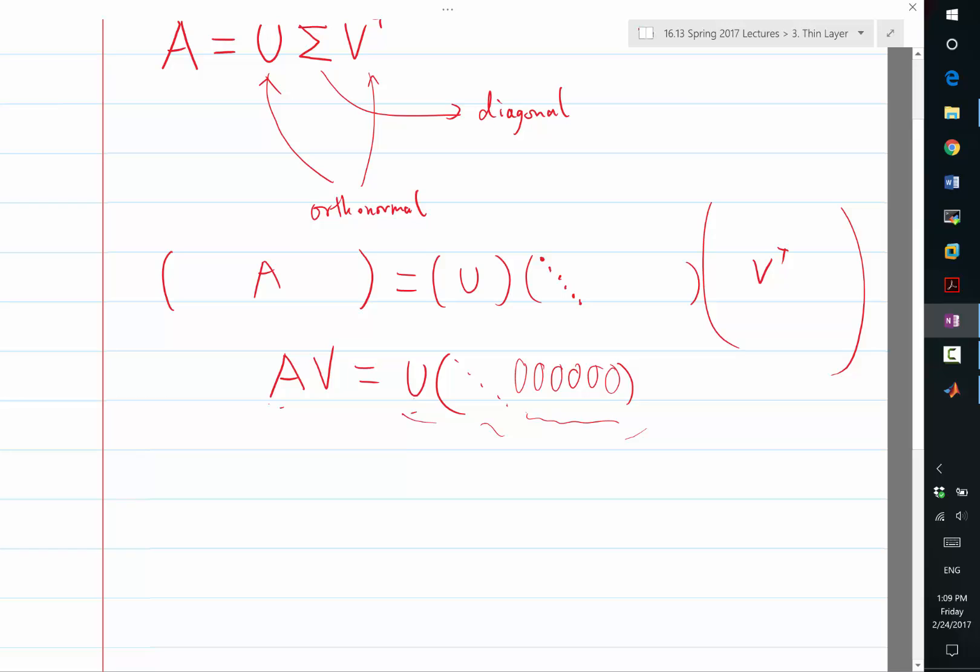Zeros, because you multiply U with the corresponding columns of sigma to get the corresponding columns of U sigma, right? So U sigma is a matrix with a bunch of columns that may be filled.